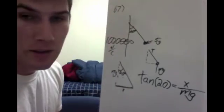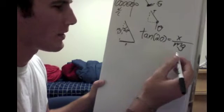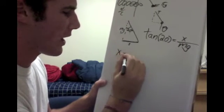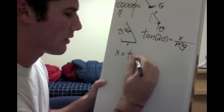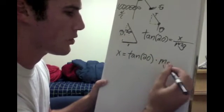So then we can solve for x. So x is going to be tangent of 20 times mg.